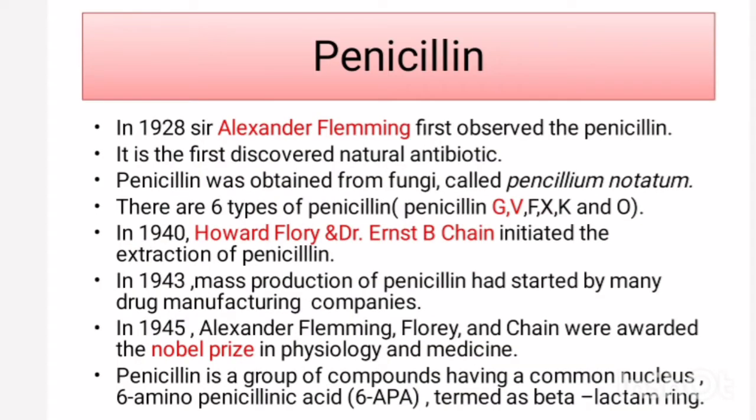Penicillin is the first discovered natural antibiotic. In 1928, Alexander Fleming first observed the penicillin antibiotic. It was obtained from a fungus called Penicillium notatum.